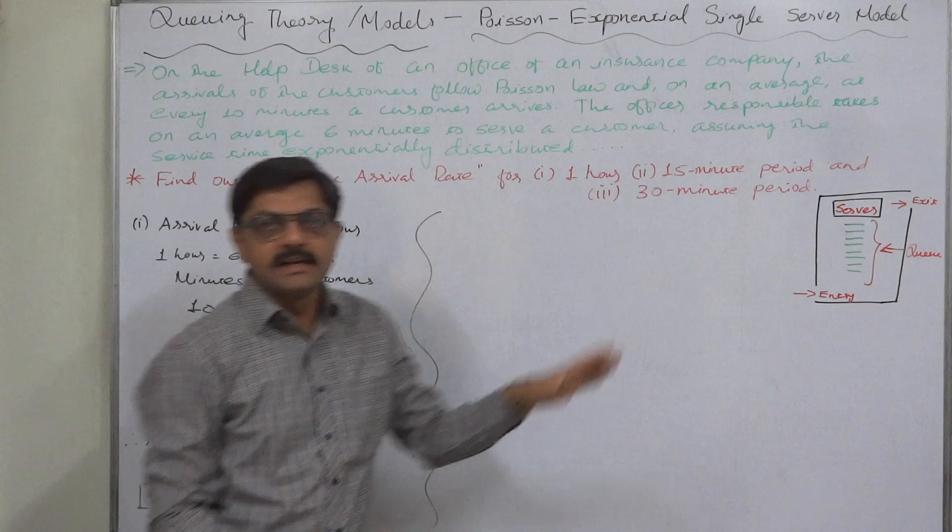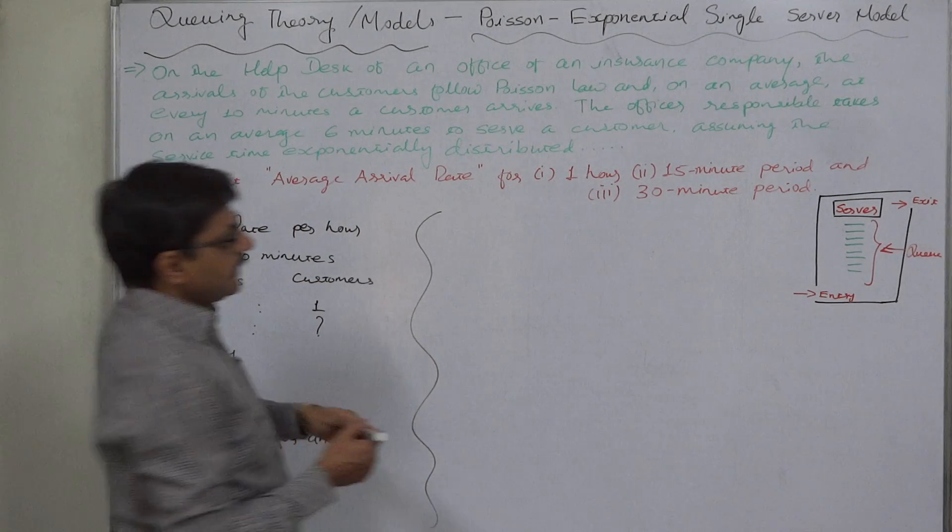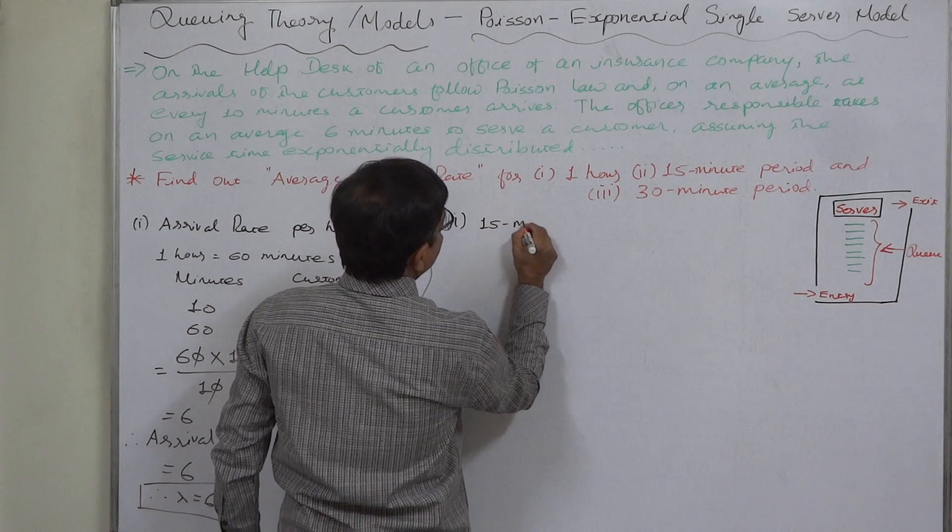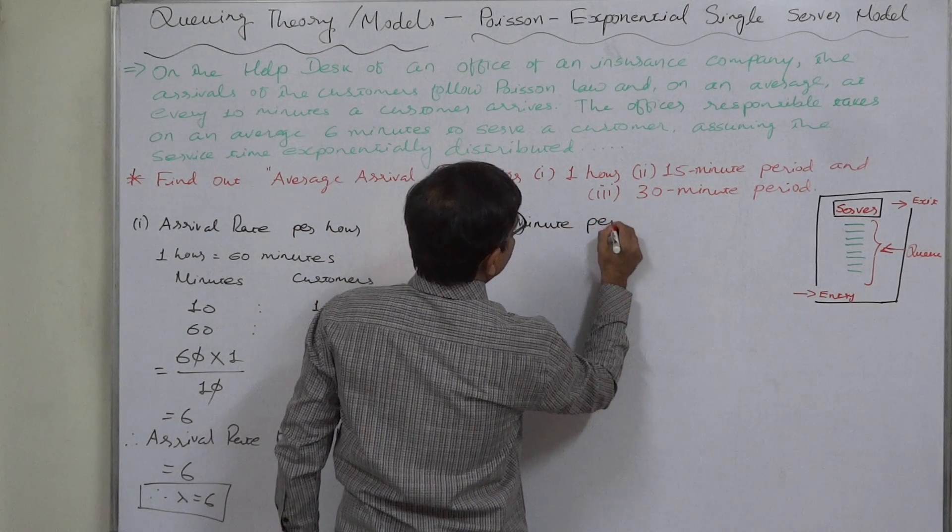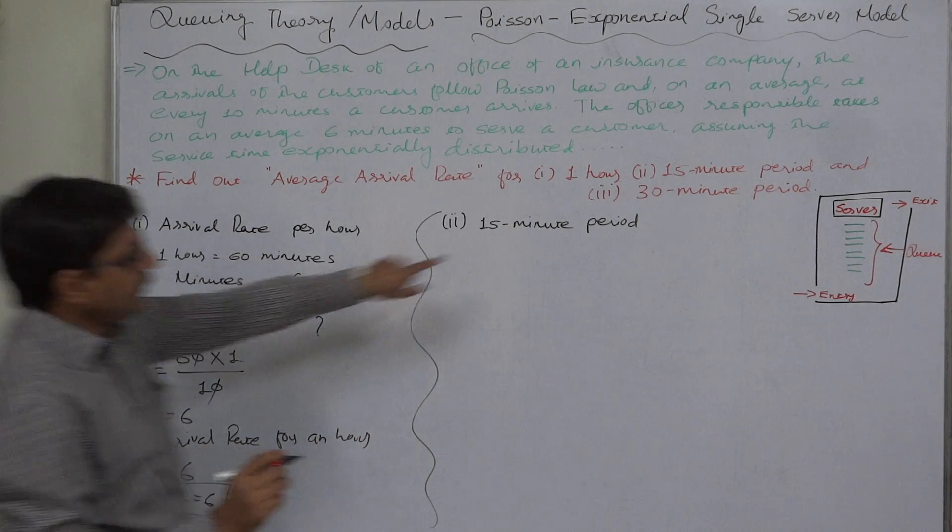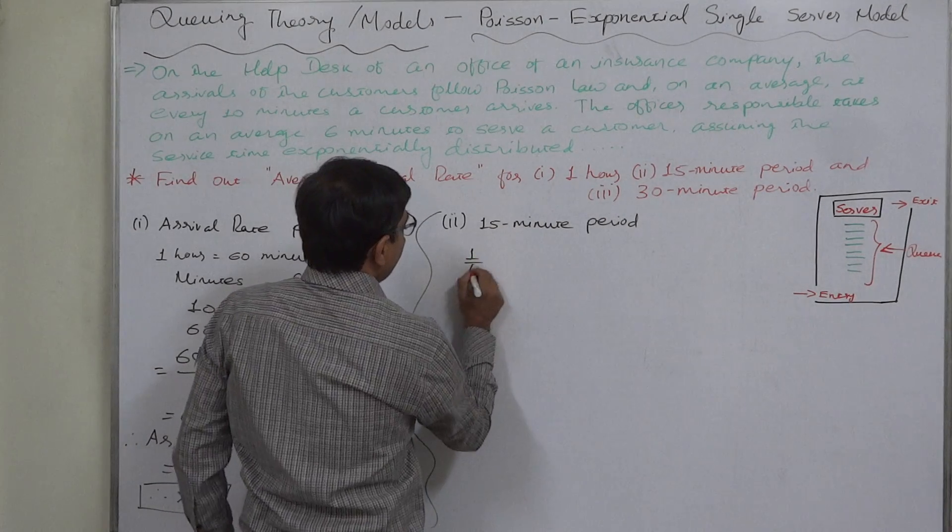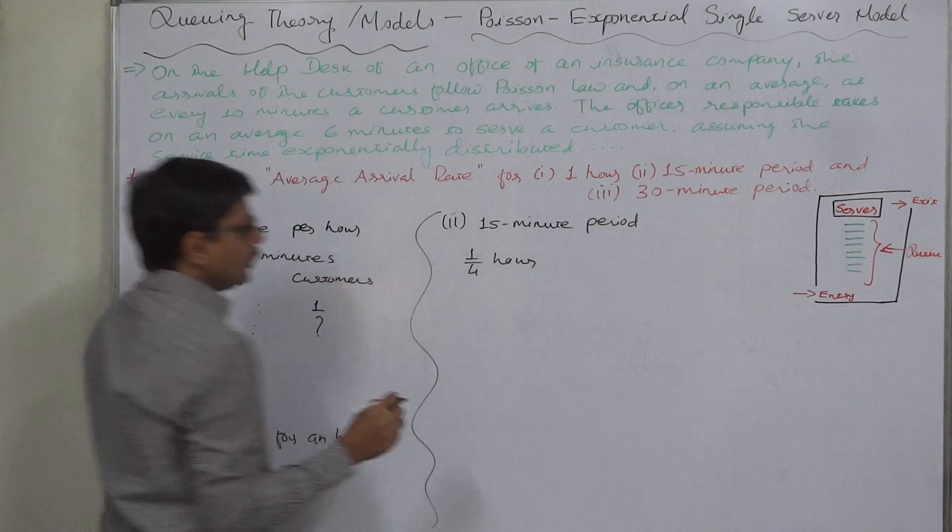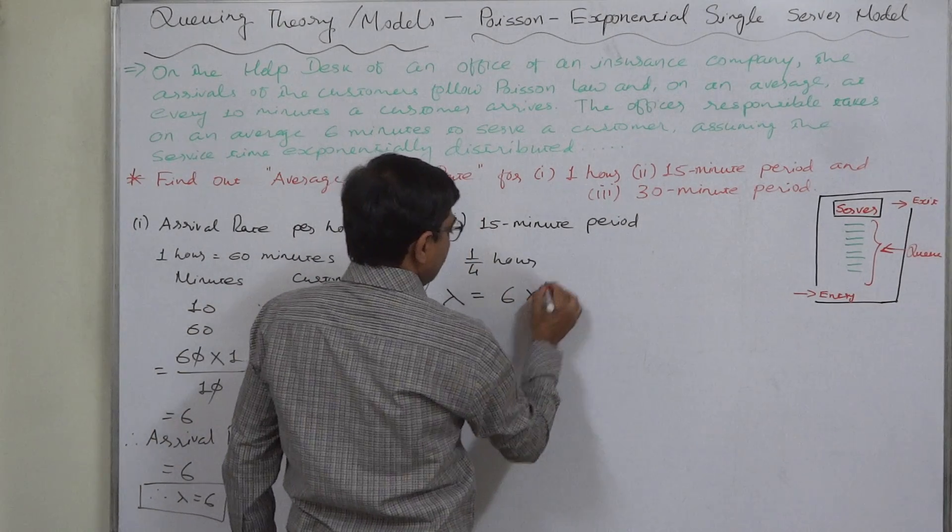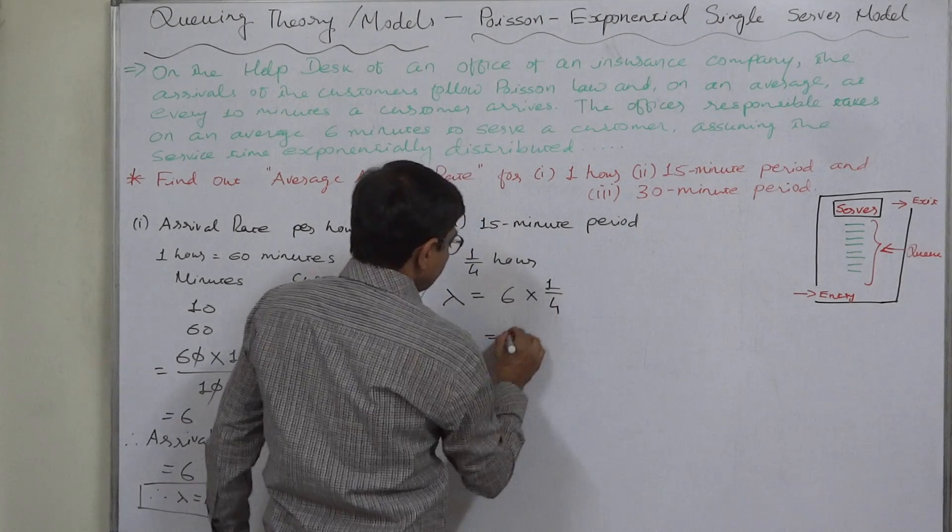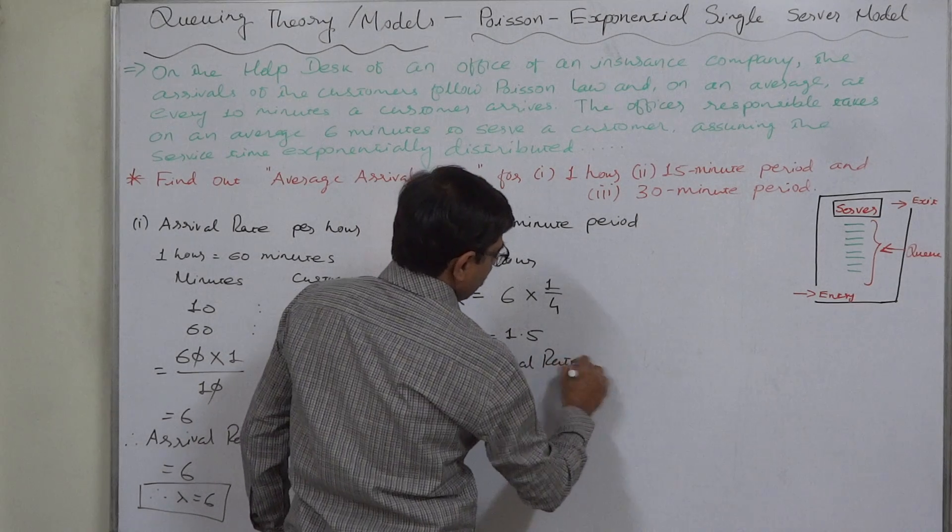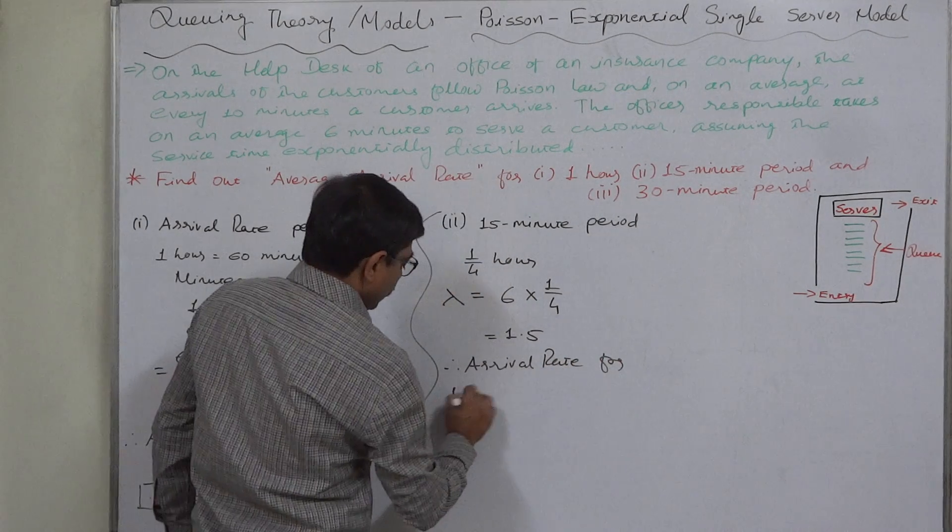Now the second is 15 minute period. 1 hour, that is 60 minutes, so 15 minute period is one-fourth hour. So lambda for 15 minute period will be lambda for an hour, that is 6, into 1 by 4, that is 1.5. Therefore arrival rate for 15 minute period equals to 1.5.